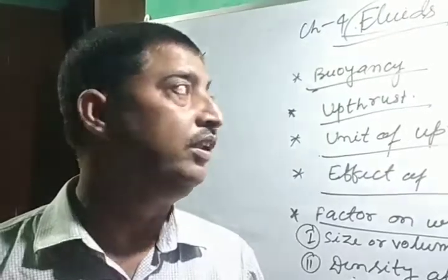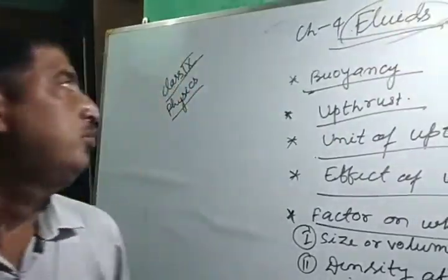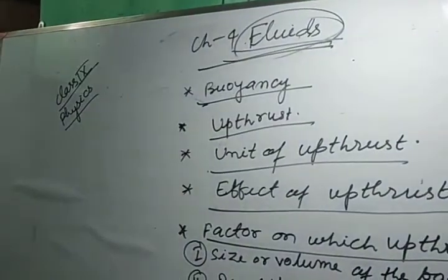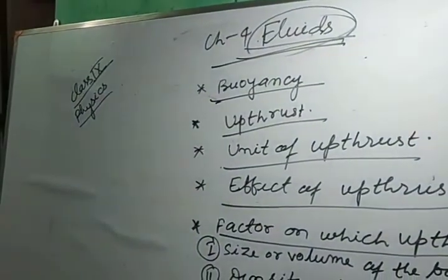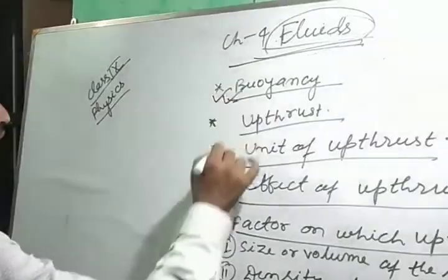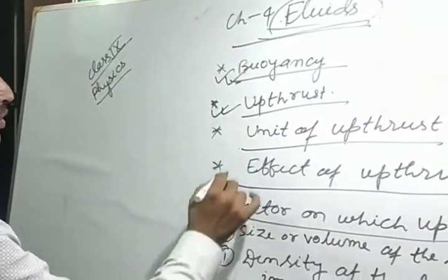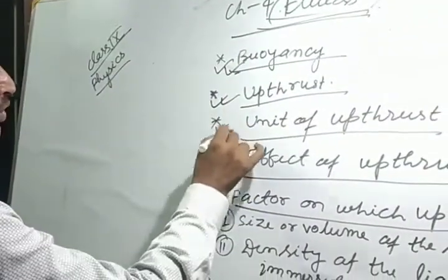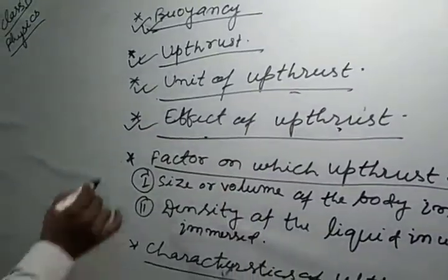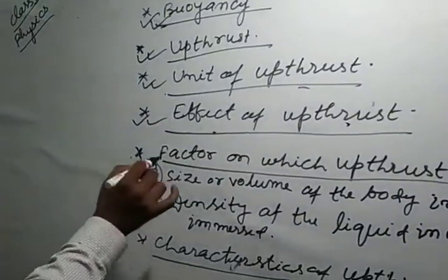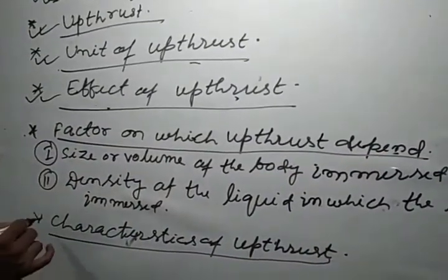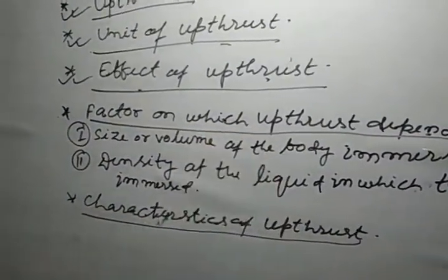Hey friends, today we will study the 4th chapter of physics: fluids. The following topics we will study today: 1st buoyancy, 2nd upthrust, 3rd unit of upthrust, 4th effect of upthrust, and next topics are factors on which upthrust depends, and characteristics of upthrust.